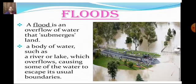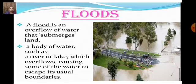The next topic is flood. A flood occurs when a river leaves its path and moves into an area it is not supposed to, with a huge amount of water. A flood is an overflow of water that submerges land — a body of water such as a river or lake overflows, causing water to escape its usual boundaries.